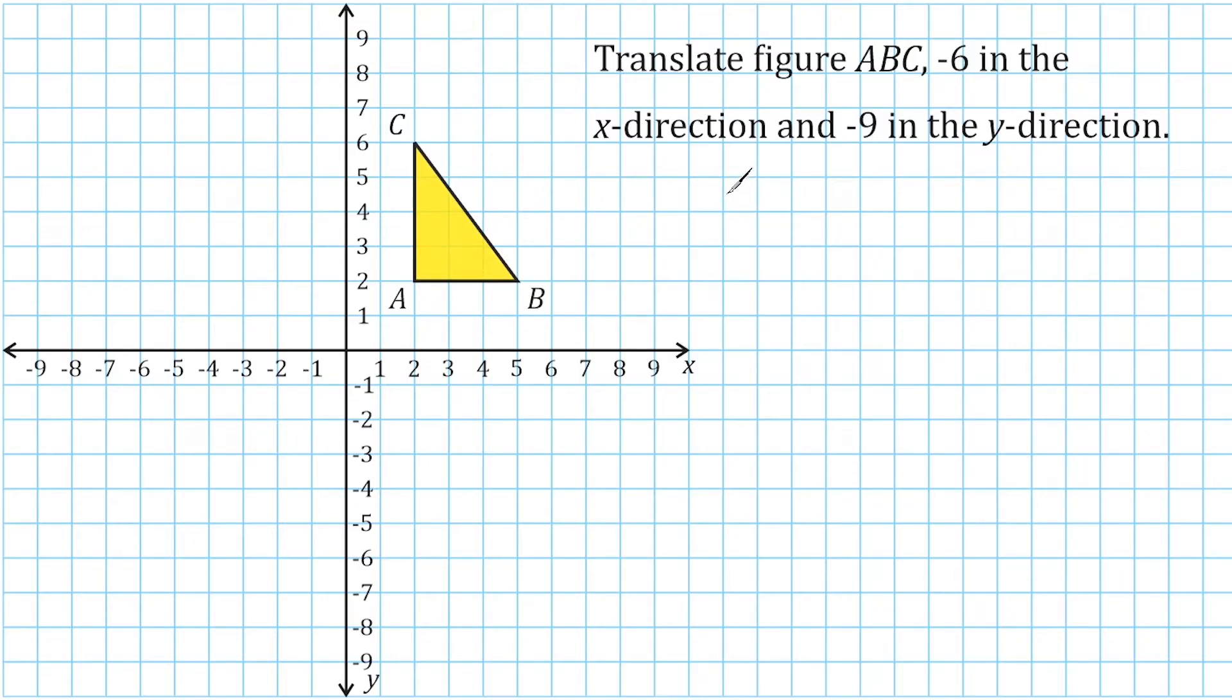...point A is located at positive 2, positive 2. So we're going to record those coordinates. So point A is located at (2, 2). Point B is located at (5, 2). And point C is located at positive 2, positive 6.